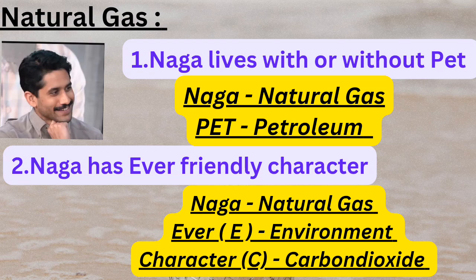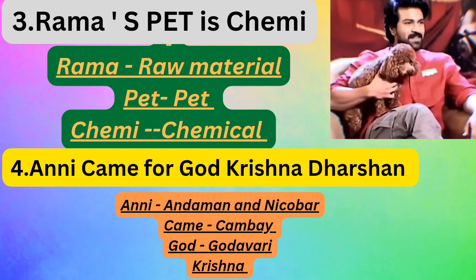The second shortcut is: 'Naga has an ever-friendly character.' Here, 'ever' contains the letter E for environment, and 'character' contains C for carbon dioxide. Natural gas is considered an environment-friendly fuel because it produces only low carbon dioxide emissions.